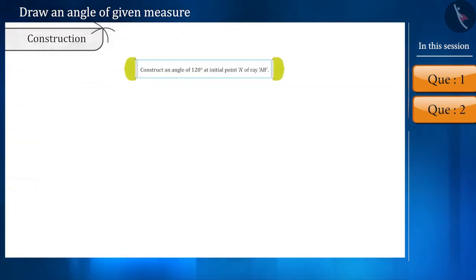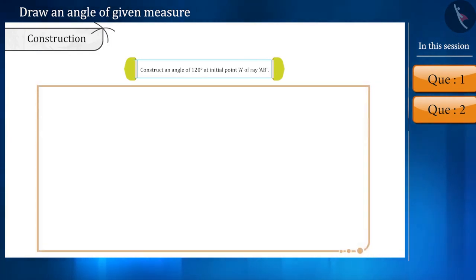So now, if we have to construct an angle of 120 degrees, what will we do? Here, first an angle of 60 degrees will be constructed like we did in the previous question.